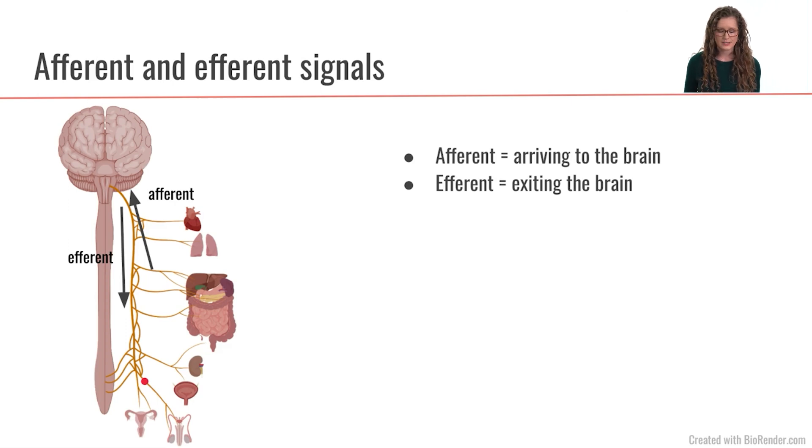The vagus nerve has signals traveling from the brain out to the periphery, out to the different tissues. And those signals that are exiting the brain and traveling down the vagus out to the other tissues, those are called efferent signals. E for exiting the brain, efferent signals. And then the vagus also has signals that are coming from the peripheral tissues and traveling back up the vagus into the brain.